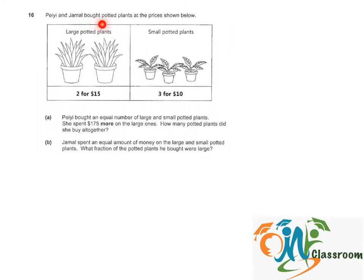Pei and Jemau bought potted plants at the prices shown below. For large potted plants, it's 2 for $15, and small potted plants are 3 for $10.